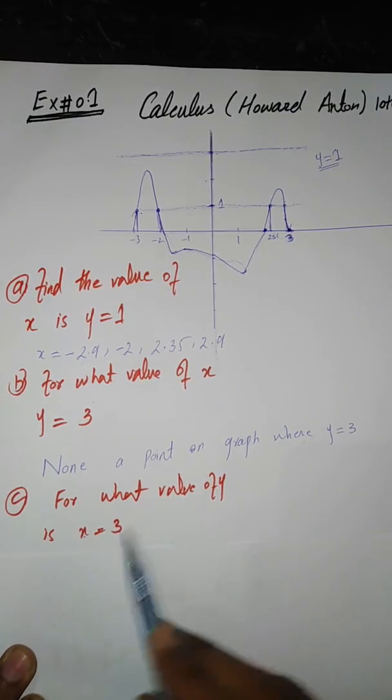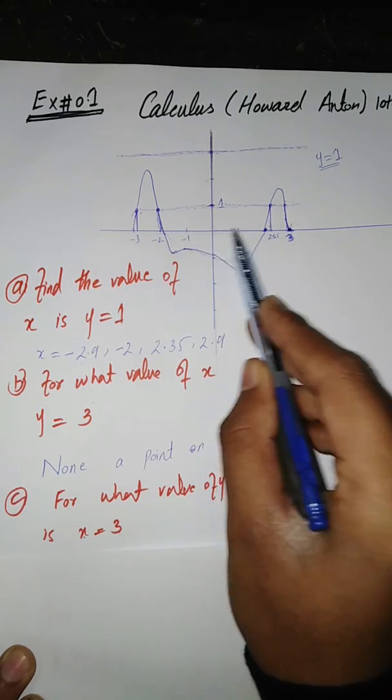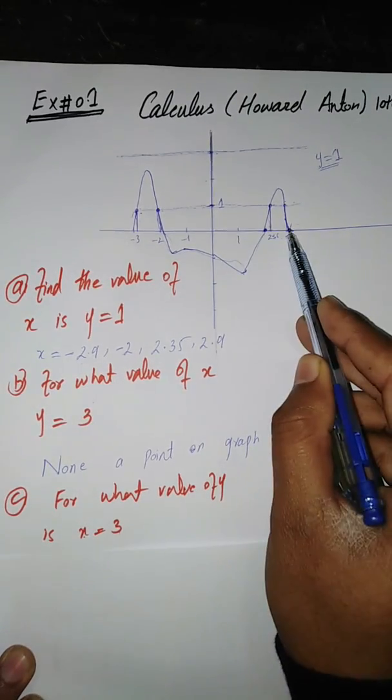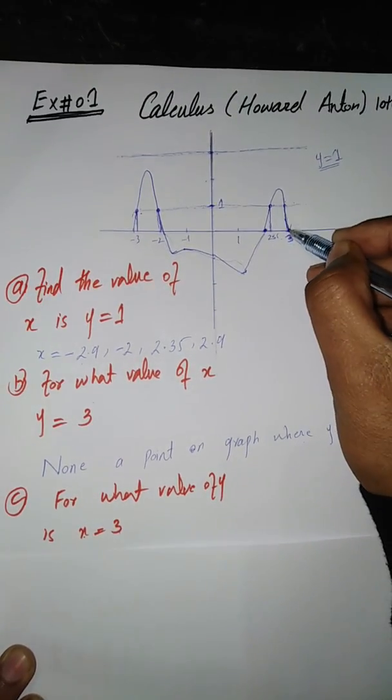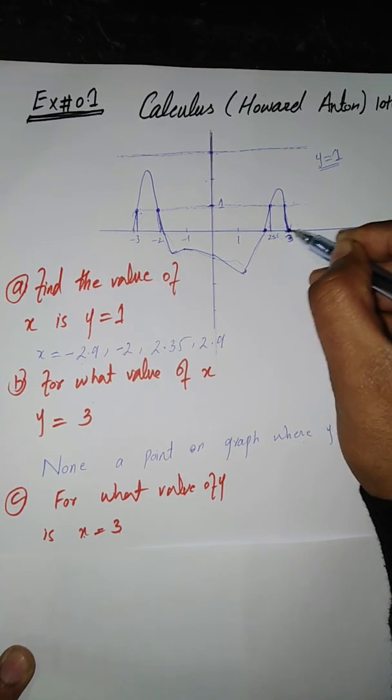So X is 3. We have to find where X is 3. Here is 0, here is 1, it is 2, here is 3. So here is 3 and this graph also meets the X axis at X equals 3. What value of Y here? That is the X axis.